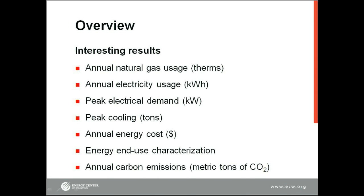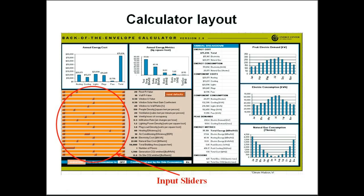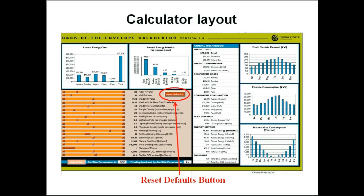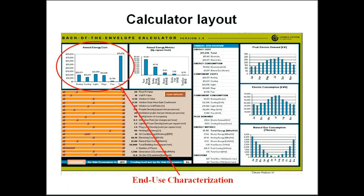Here we see the overall calculator layout. There are the input sliders, which allow you to tailor the calculator to fit your specific building design. The input values and descriptions, which are controlled by the sliders, show the actual numerical values of the parameters of your building. There is an economizer on/off button, which turns on the economizer if your building uses that control. A reset defaults button, which sets all the input parameters back to their original values. An annual energy cost result, which will change as you update your building parameters. This area shows the annual energy usage in both electricity and natural gas, the peak demand for both electric demand and peak cooling, and the energy end-use breakdown in dollars — including heating, cooling, lighting, plug, and fan energy end-use breakdown, as well as the total. And finally, carbon emissions on a metric ton basis.